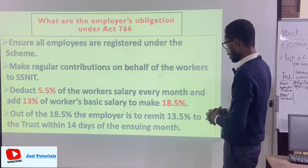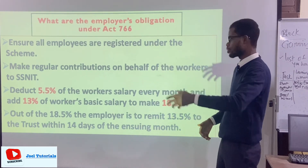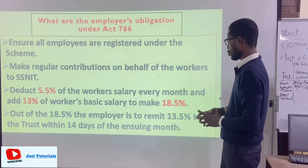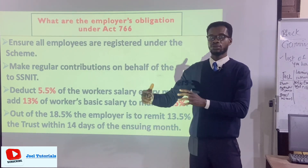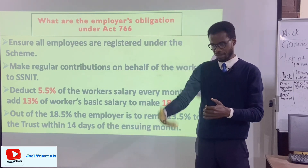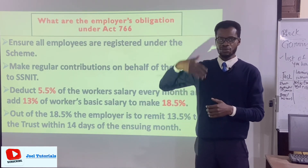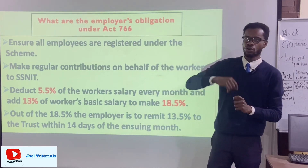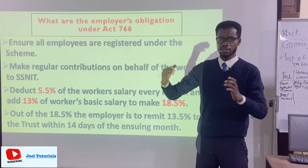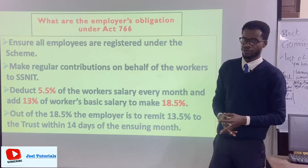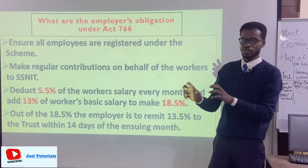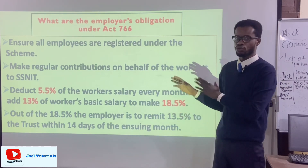Out of the 18.5%, the employer is to remit 13.5% to the trust within 14 days of the end of the month. If he is unable to pay by month-end, the following month he must ensure the payment does not cross the 14th — he has two weeks to pay for the previous month, and will also need to pay for the subsequent month.